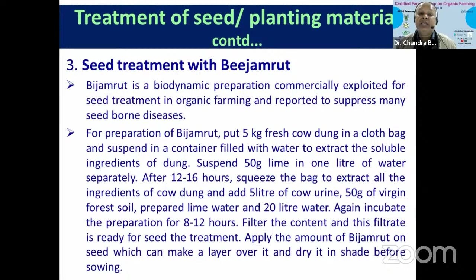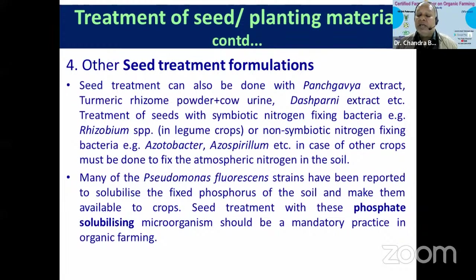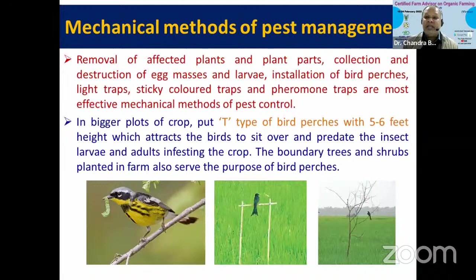In natural farming, Beejamrit is one option to treat seeds. Other seed treatment methods include Panchagavya and Sperni extract. Seed treatment with Rhizobium, Azotobacter, and Azospirillum should be done for enhancing biological nitrogen fixation. You can also treat seed with Pseudomonas fluorescens, which has phosphate-solubilizing activity, or any bioagent or microbial formulation with nutrient-solubilizing or nutrient-mineralizing activity.